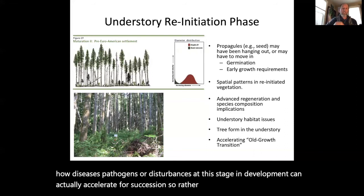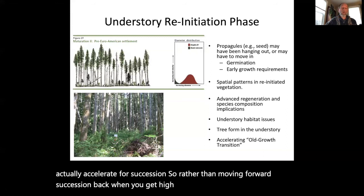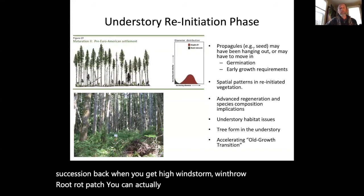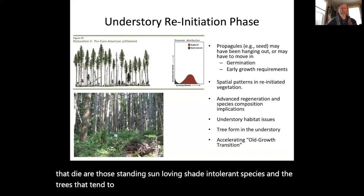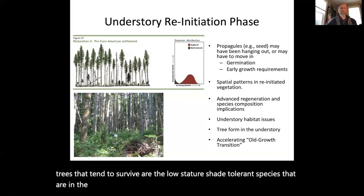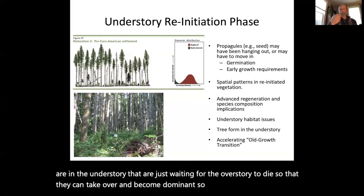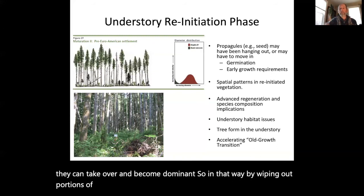There's talk about how diseases, pathogens, or disturbances at this stage can actually accelerate forest succession. Rather than moving succession back, when you get a high wind storm, wind throw, or root rot patch, you can actually move succession forward because the trees that die are the sun-loving shade-intolerant species, while the trees that tend to survive are the low-stature shade-tolerant species in the understory waiting for the overstory to die so they can become dominant. By wiping out portions of the overstory, you can accelerate development towards climax forest conditions.